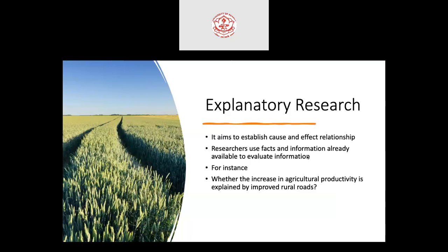For instance, whether the increase in agricultural productivity is explained by improved rural roads — this is a cause-and-effect relationship. Agricultural productivity is the effect, and the cause may be improved rural roads. This cause-and-effect relationship can be examined through explanatory research. Multiple regression models and structural equation models are suitable for this kind of research.